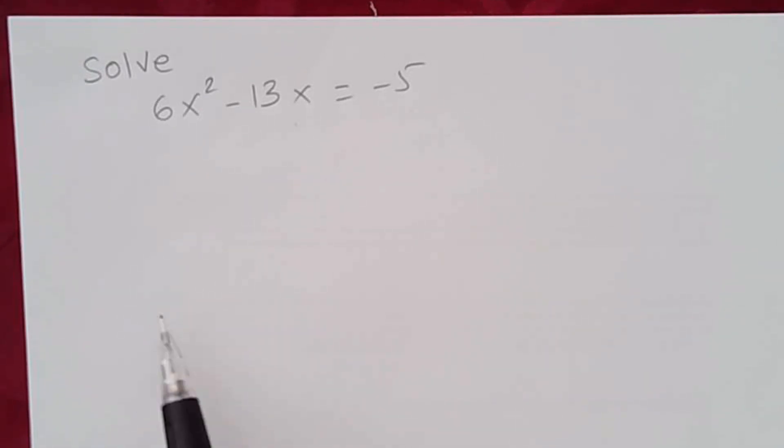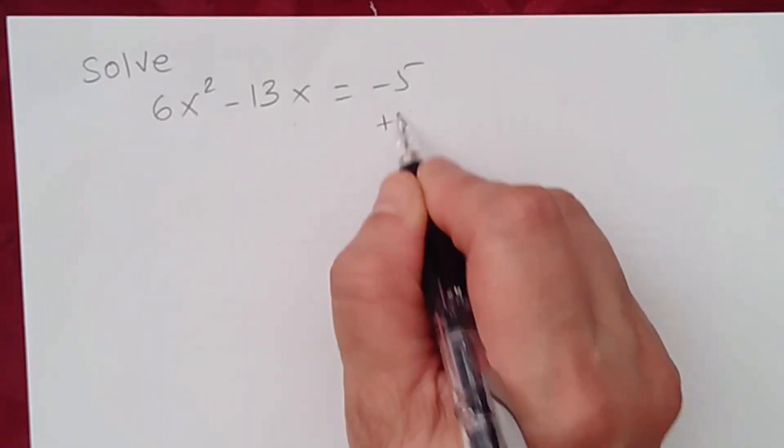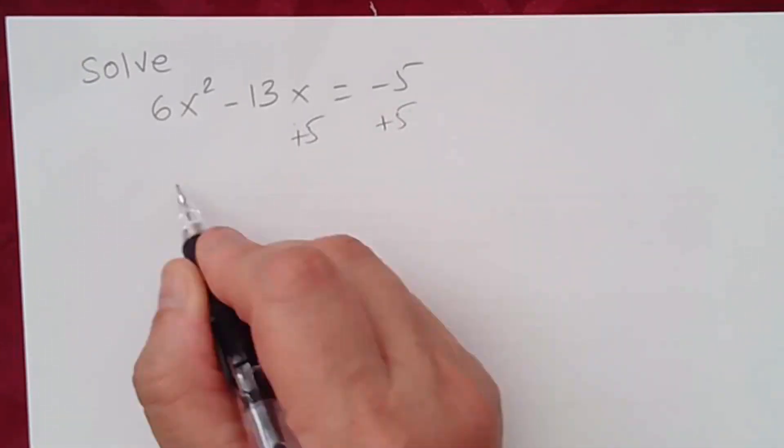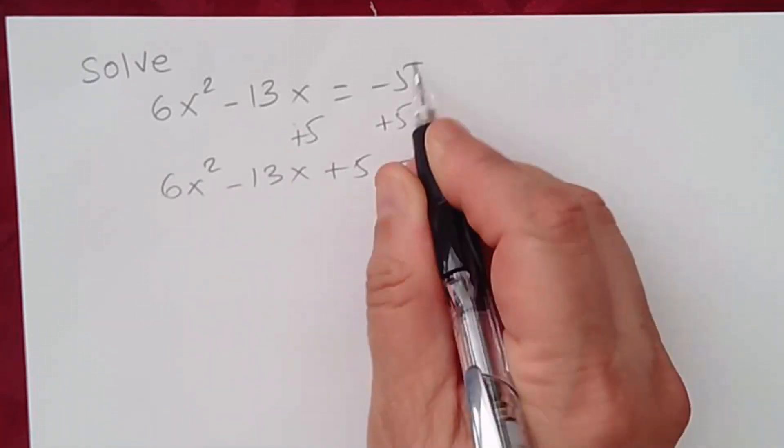Now, to solve this equation, we need to take the constant term to the left side of the equation. So we need to add 5 on both sides. We get 6x squared minus 13x plus 5 equal to 0.